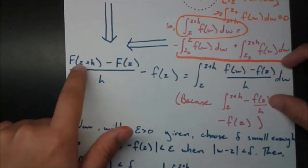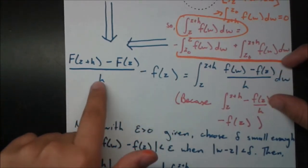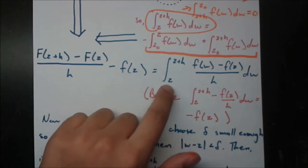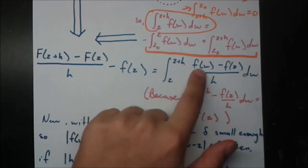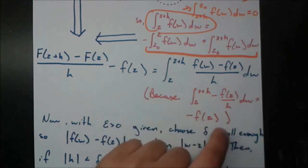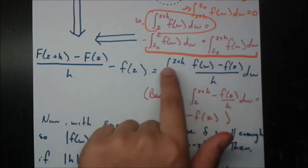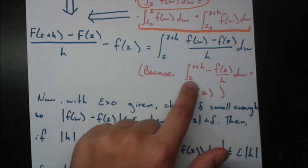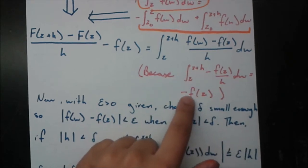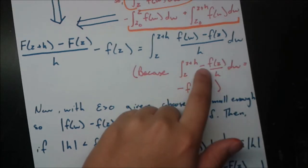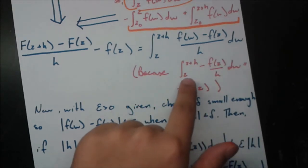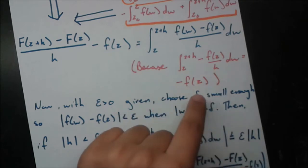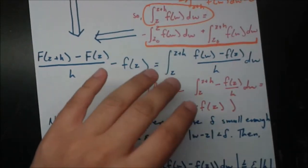We have F(z+h) minus F(z), and now we divide by h and subtract small f(z). On the integral side, we have the limits from z to z+h of [f(w) minus f(z)] over h dw. The reason f(z) gets incorporated inside the integral is because the integral of negative f(z)/h from z to z+h equals negative f(z), since f(z) and h are constants — that h cancels, giving negative f(z).